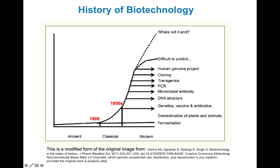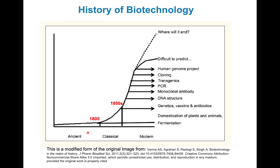Here's a figure from a paper that follows the history of biotechnology, and it divides human civilization into three areas: ancient, classical, and modern. This division is based on chronological timing. Before the 1800s is described as the ancient world of biotechnology, and the main biotechnology method used by human beings is fermentation.